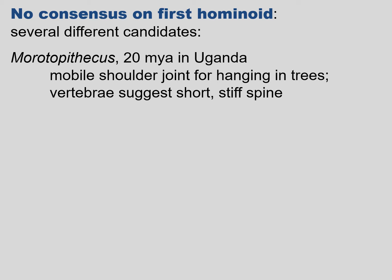No consensus exists on what was the first hominoid. We have several different candidates — I'll talk about just two. Morotopithecus, found 20 million years ago in Uganda, Africa. It had a mobile shoulder joint for hanging in trees, and the vertebrae suggested it had a short, stiff spine — both characteristics of apes.